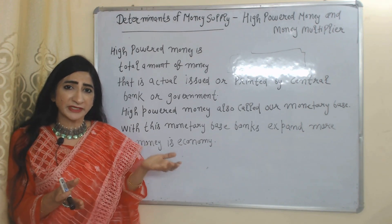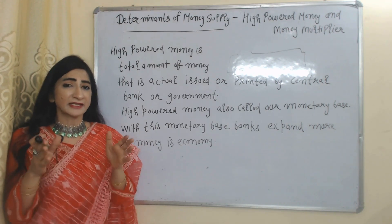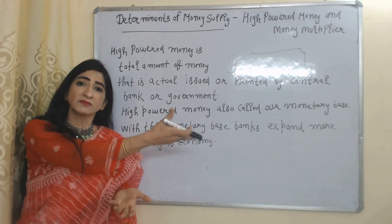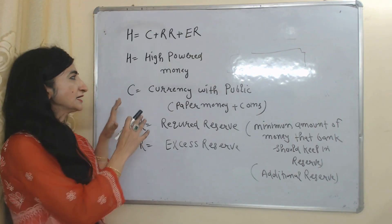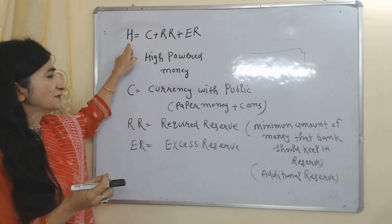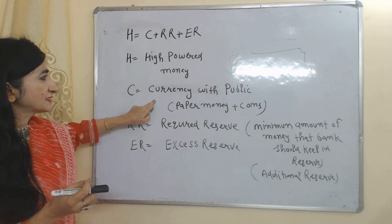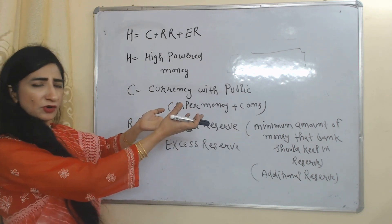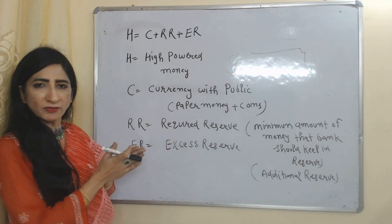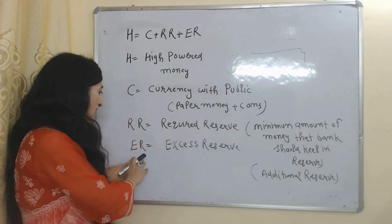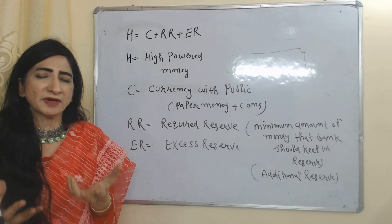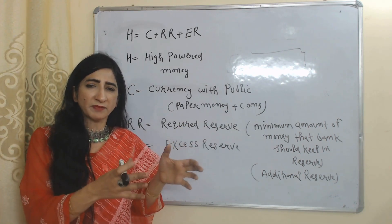High powered money is our money base because with the help of this money base, banks create more money in the economy. High powered money is equal to C plus RR plus ER. Here H is high powered money, C means currency with the public in the form of paper money or coins, RR is required reserve — the minimum amount of money that a bank should keep in reserve — and ER is excess reserve, which is the additional reserve held by the bank.